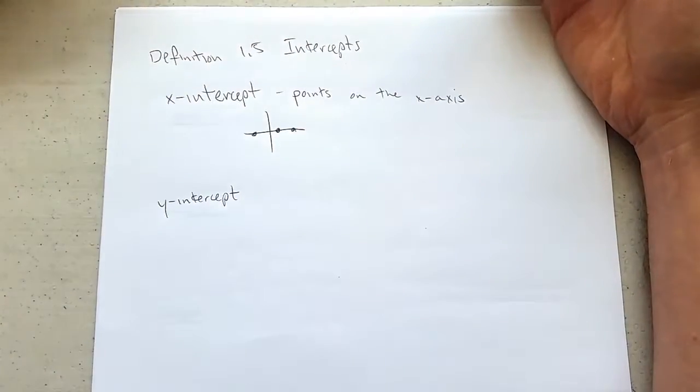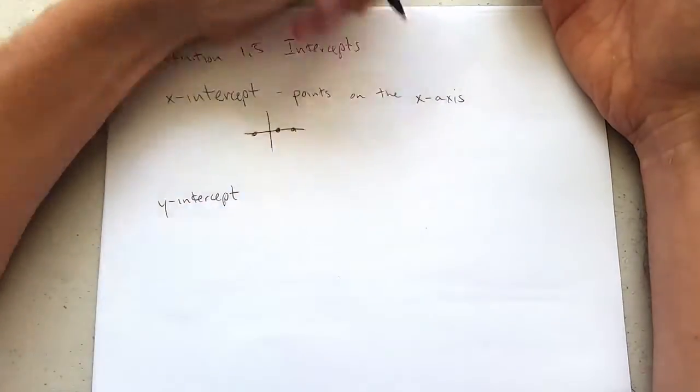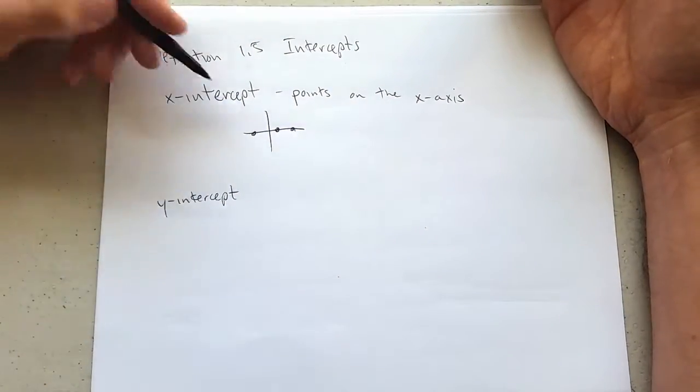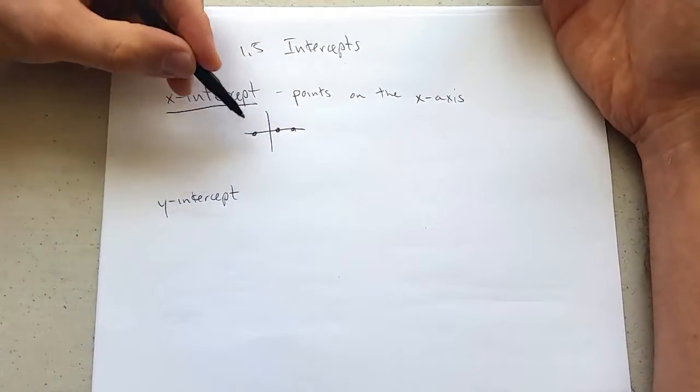These are all on the x-axis. What do they have in common? Intuition might make you believe that their x-coordinate should be zero.